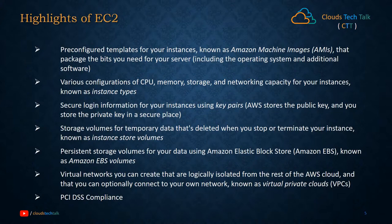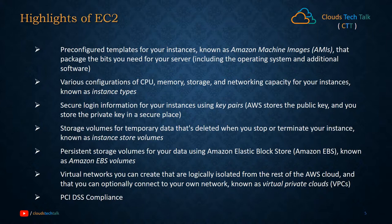Key highlights of EC2: first, there are pre-configured templates known as Amazon Machine Images (AMIs), which are bundles of required packages along with the operating system. AMIs can be formed for Linux, Windows, or whatever you want — there are multiple different types available. You can pick an AMI that includes all required packages, create your own AMI, and even publish it to the Amazon Marketplace so others can use it.